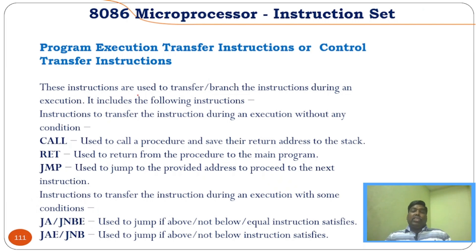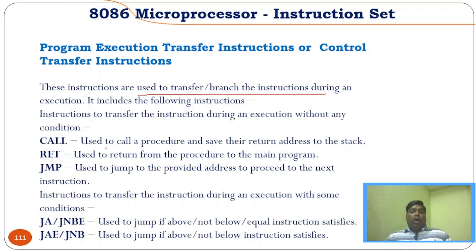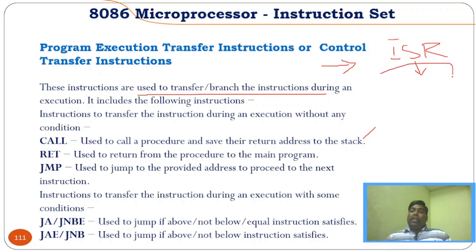Control transfer instructions are used to branch or transfer instruction execution. We normally know CALL, RETURN, and JUMP. CALL is used to call a procedure and save the return address to the stack. Whenever there is an interrupt, there will be an interrupt service routine at a different address. When an interrupt happens, it goes to that interrupt subroutine, executes that program, and comes back to the main program — that is the CALL instruction.